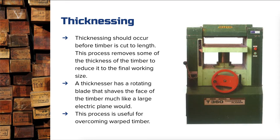A thicknesser has a rotating blade inside — or several blades, or modern ones with helical blades, which are multiple smaller blades in a helical shape that spin on the inside. Your timber goes through the centre and that planing blade across the top shaves off one face — the top face of your board — similar to an electric hand plane but more controlled. Being machine-based, it gives a more consistent amount of material removal. It can also be useful for overcoming some very minor warps in timber, though it may not work depending on how bad the warping is.